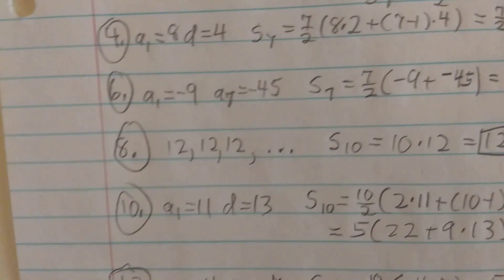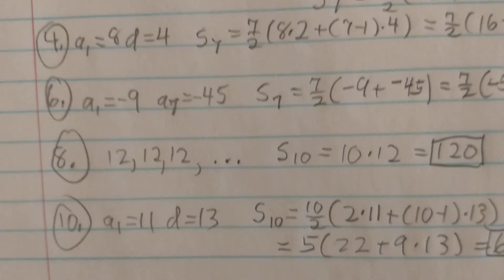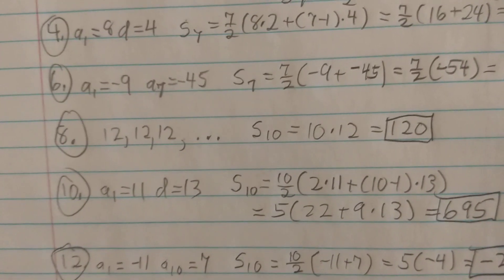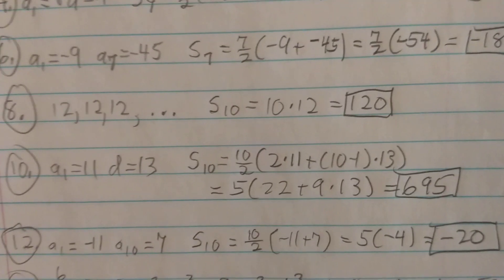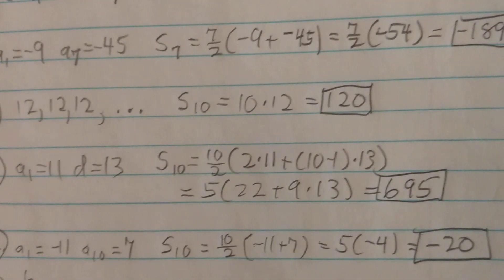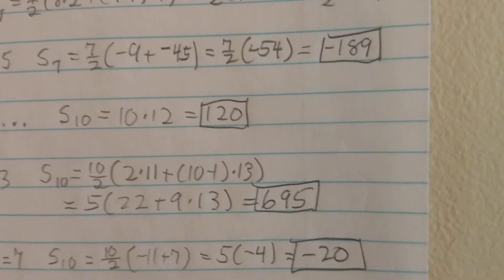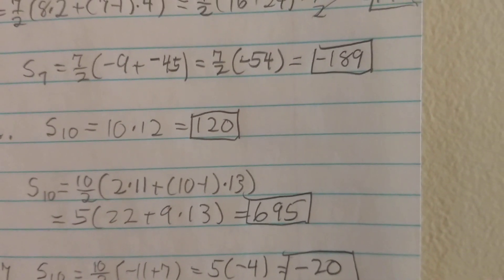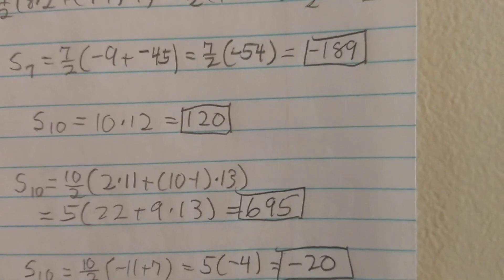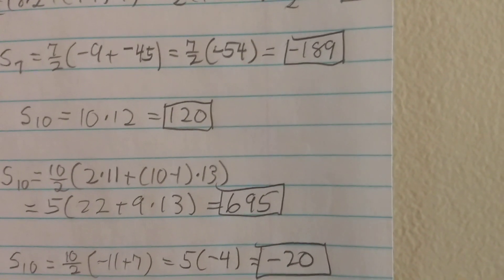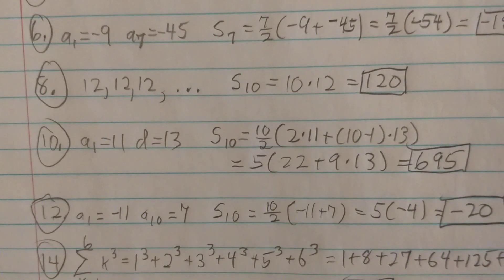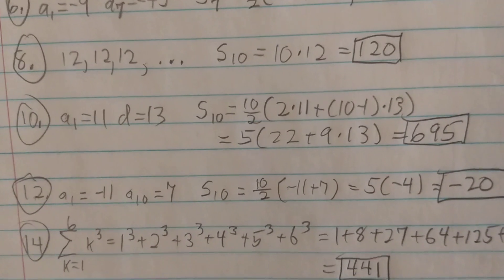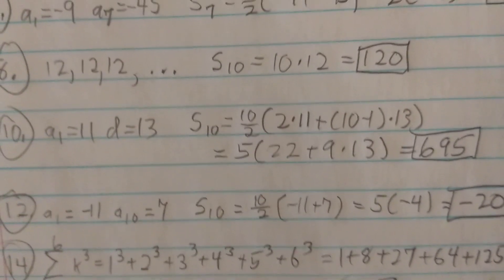For problem 6, the first term a1 is negative 9 and the seventh term a7 is negative 45. Using the first-plus-last formula, S7 is 7 over 2 times negative 9 plus negative 45, which gives 7 halves times negative 54. On the calculator that comes to negative 189. For problem 8, the sequence is composed of just 12s, so S10 is simply 10 times 12, which equals 120.